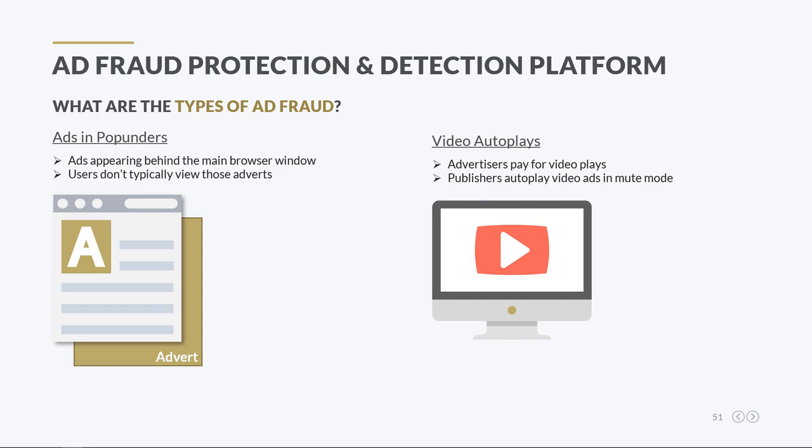Advertisers who run video campaigns typically pay for video plays. Many publisher websites feature autoplay videos in mute mode, which does not require a viewer to click on the video for it to play. Advertisers get charged immediately, whether users have actually watched the video ads or not.